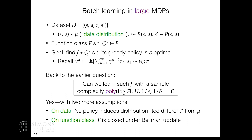The first assumption is on data: the data needs to be exploratory. Exploratory means that no policy will induce a distribution that is too different from the data distribution μ. The second, more interesting assumption concerns the function class: even if we have a realizable function class, that's not enough. We need something much stronger — one typical assumption is that the function class is closed under the Bellman update operator.